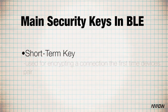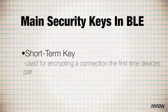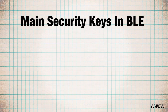The short-term key is used as a key for encrypting a connection for the very first time devices pair. The short-term key is generated by using three pieces of information: the temporary key and two random numbers, one generated by the slave and one generated by the master. Once the connection is encrypted with a short-term key, the other keys are distributed.